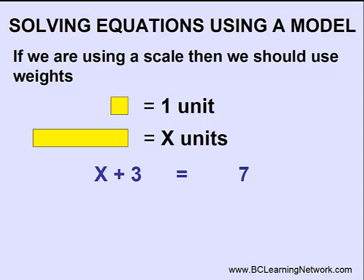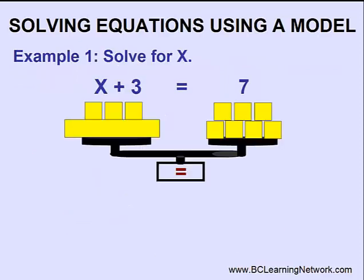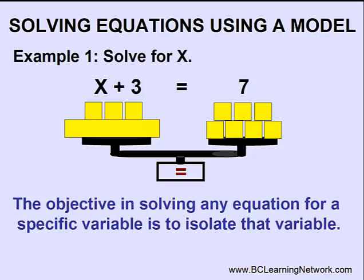The equation x plus three equals seven will look like this for our model. Now we're ready to solve this equation for x. The important thing to remember is that we can do whatever we want as long as we keep this scale balanced at all times. Our objective is to try to get x rectangular box all by itself.